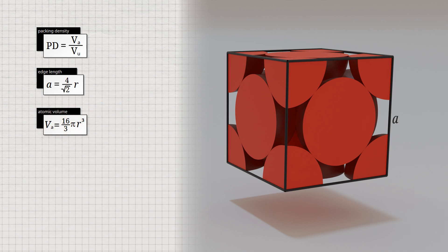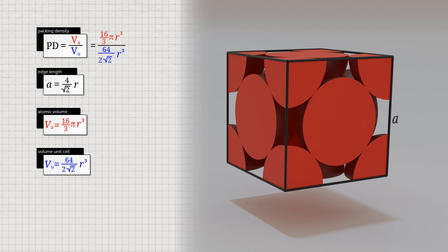We now again determine the volume of the unit cell using the previously derived relationship between edge length and atomic radius. For the face-centered cubic unit cell, the shown formula is obtained in this way. We calculate the ratio of the atomic volume to the volume of the unit cell in order to determine the packing density. In this way, we obtain a packing density of 0.74 for the face-centered cubic lattice, which means that 74% of the lattice structure is occupied by atoms.